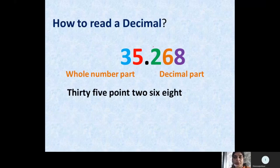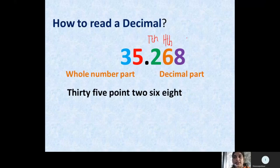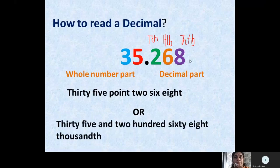The alternative way to read this is: we write the places on the top of each digit. This is tenth place, so we write TTH. This is hundredth place, so we write HTH. This is thousandth place, so we write THTH. Now we can write this number as '35 and 268 thousandths'.